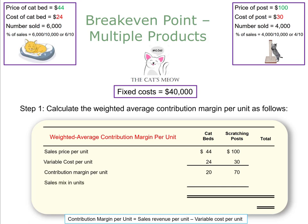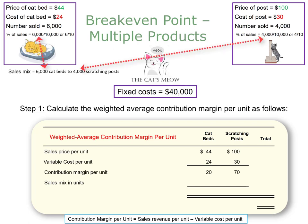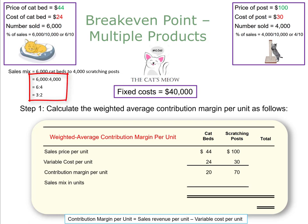Next we need to calculate the sales mix in units. The sales mix for these two products can be described as 6,000 cat beds to 4,000 scratching posts, or simplified to 6 to 4, or reduced to the least common ratio of 3 to 2. All three are proportionally the same. I will choose to use 6 to 4, where the 6 represents cat beds and the 4 represents scratching posts.